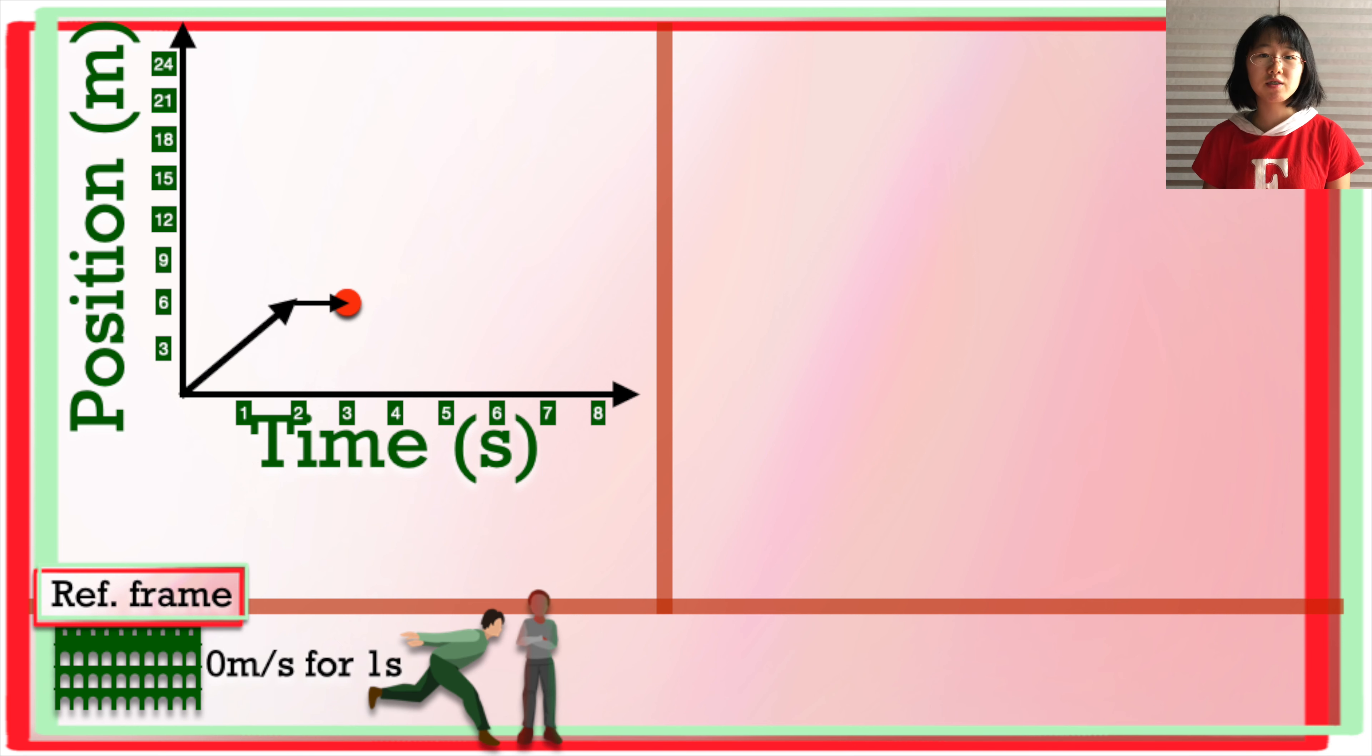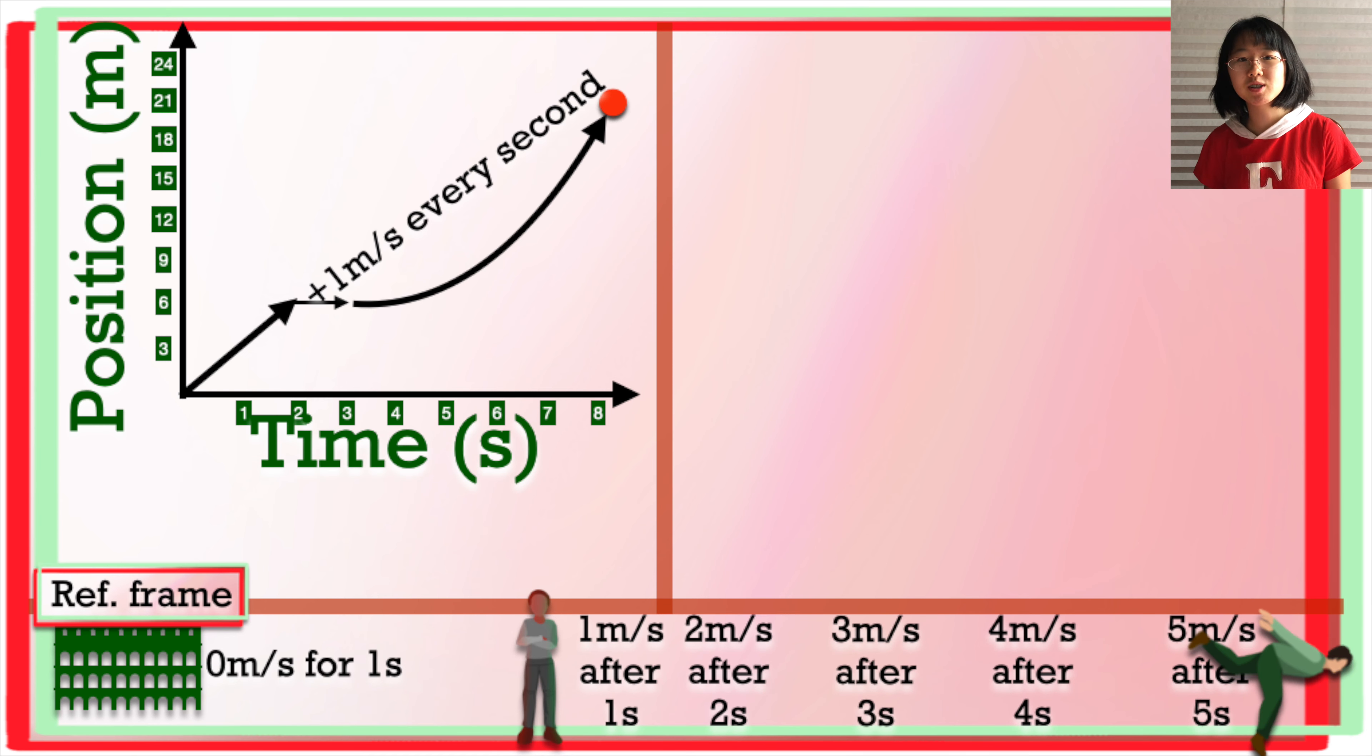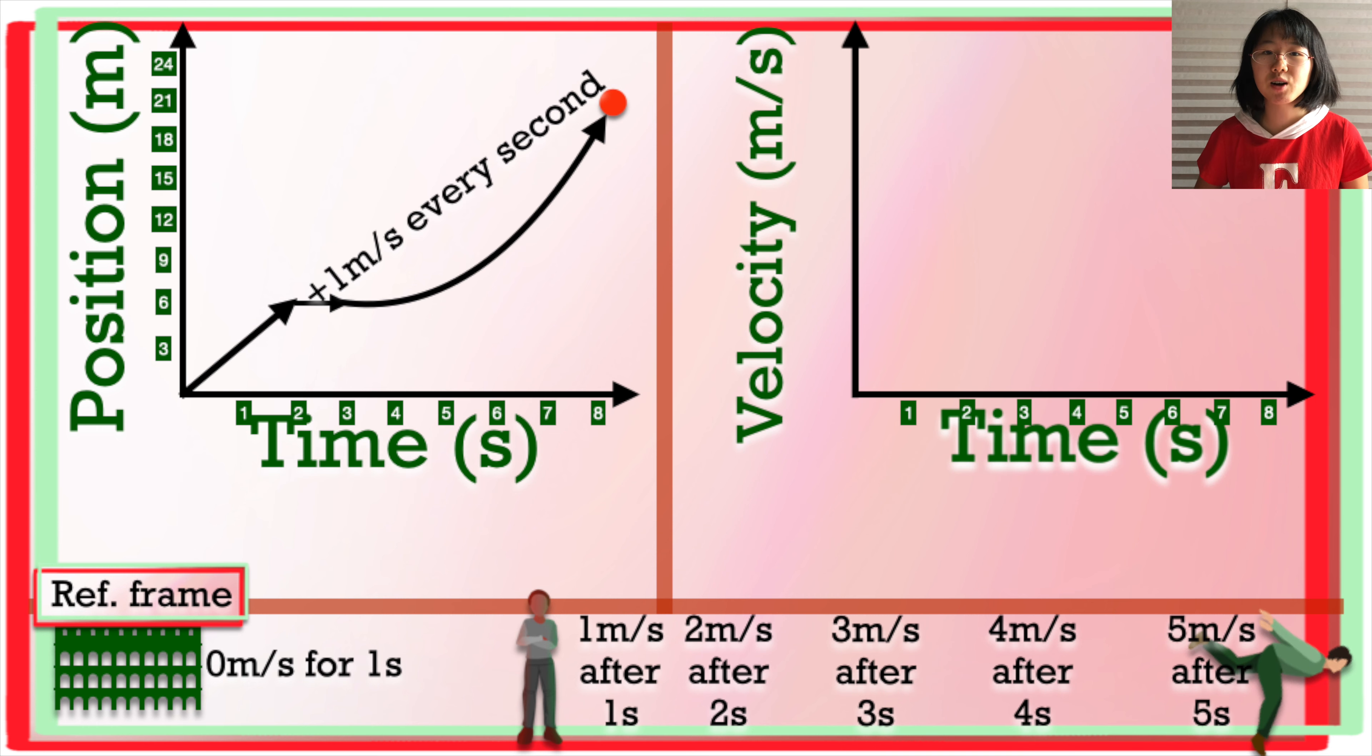You pause your jogging for a second to prepare yourself, and then you whip out that Naruto running, and your velocity increases by 1 meter per second every second, so your position changes by 1 meter per second, then 2 meters per second, then 3 meters per second, and so on. Now, let's transfer all of that to a velocity time graph.